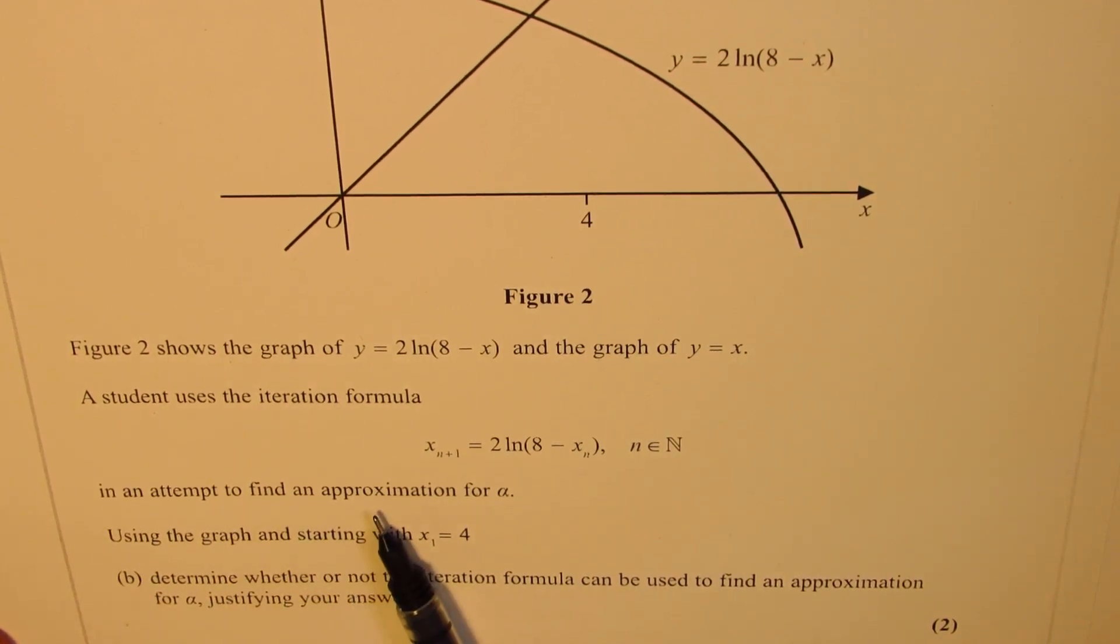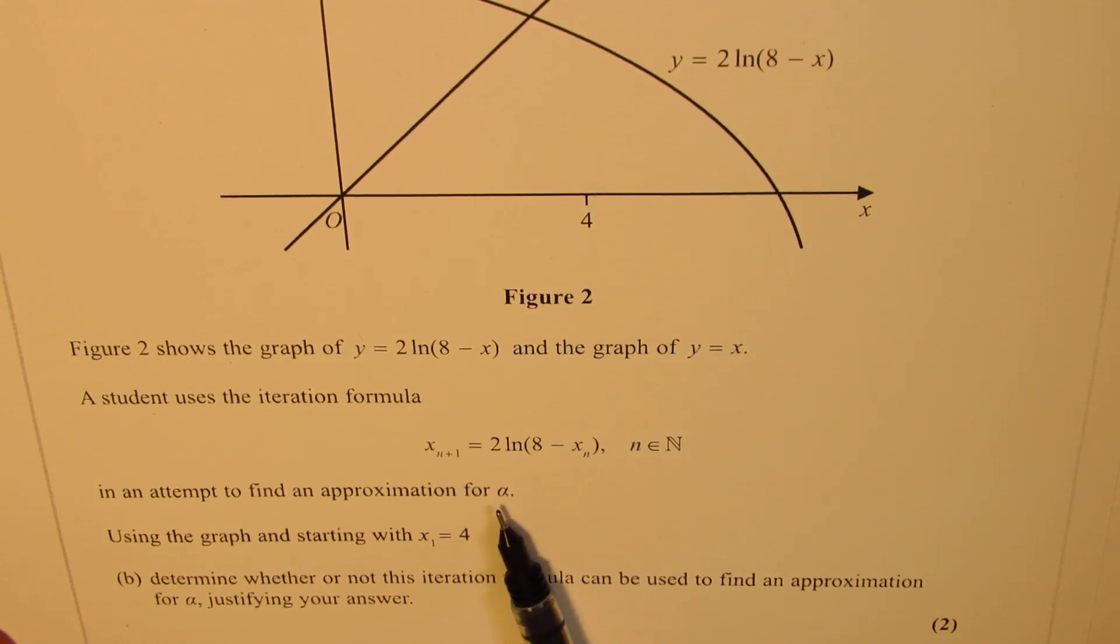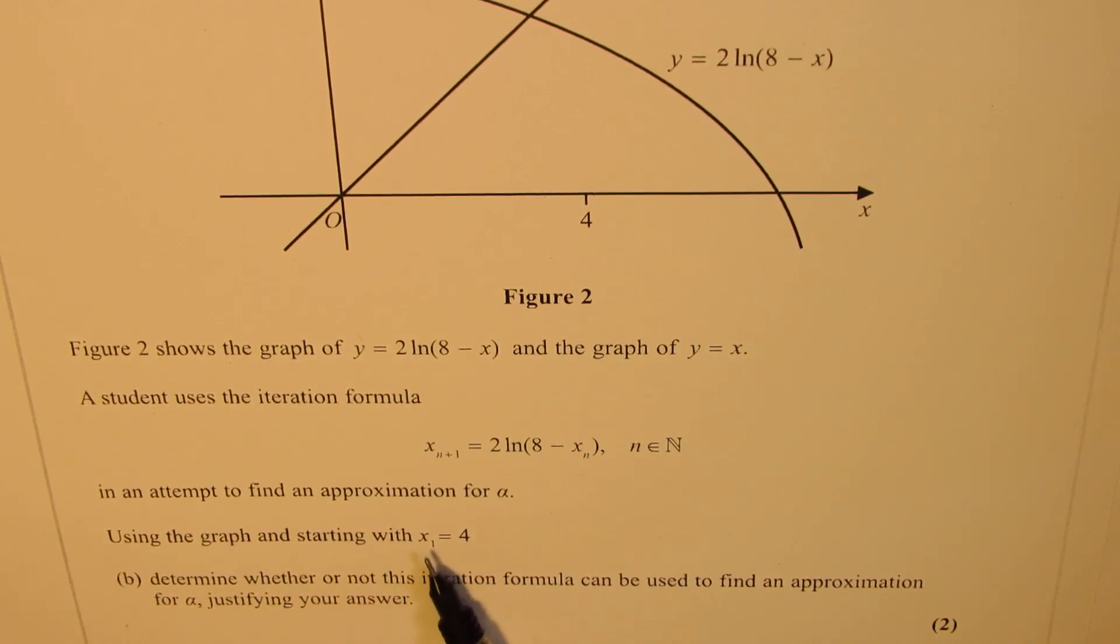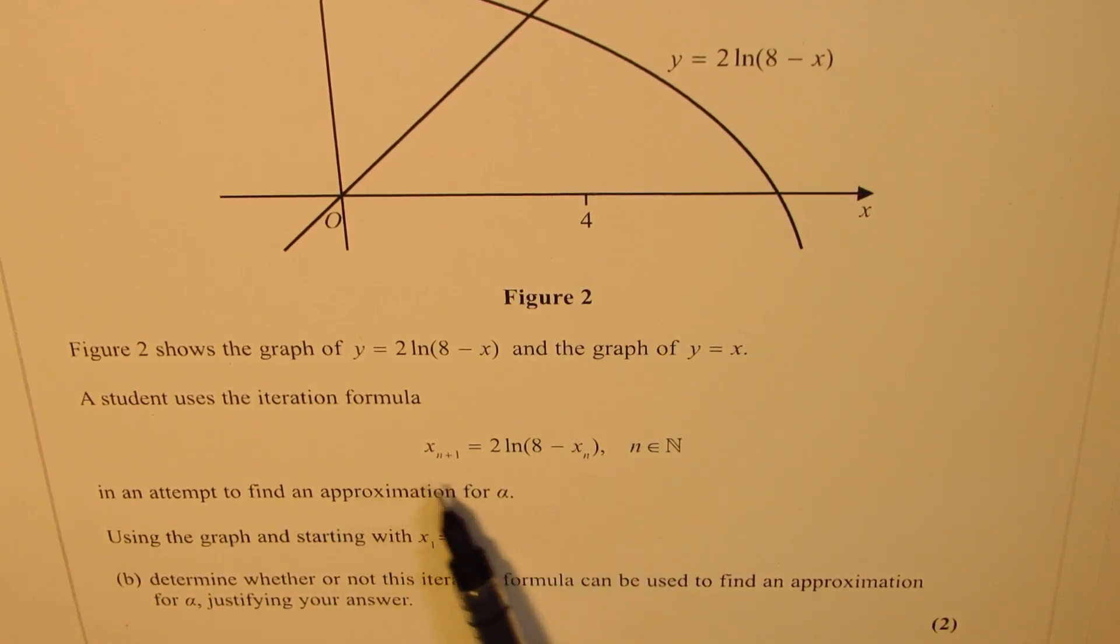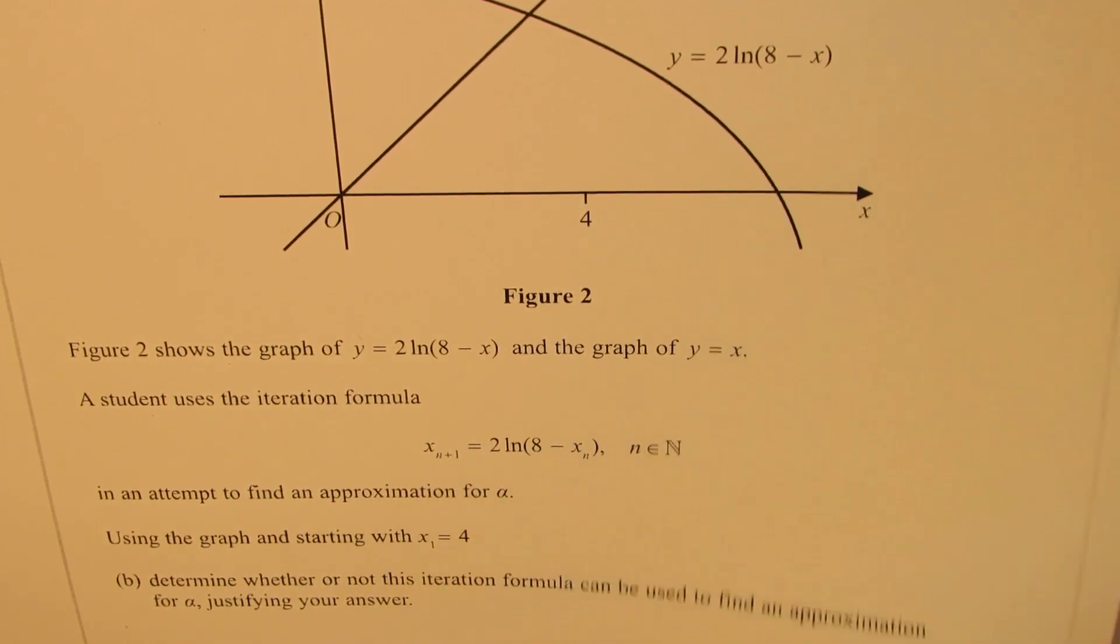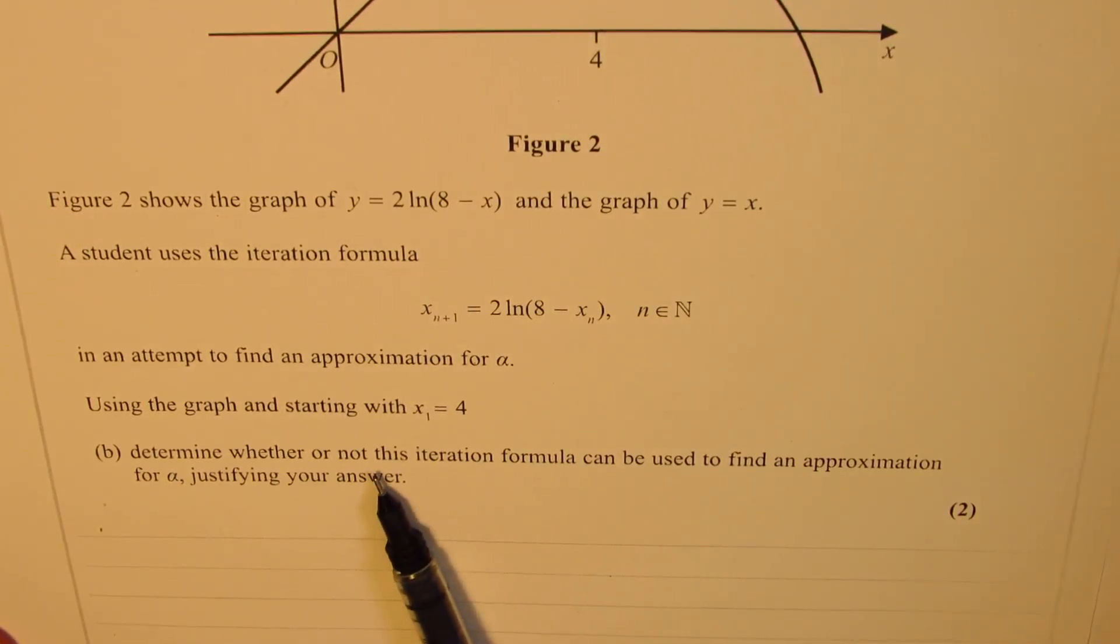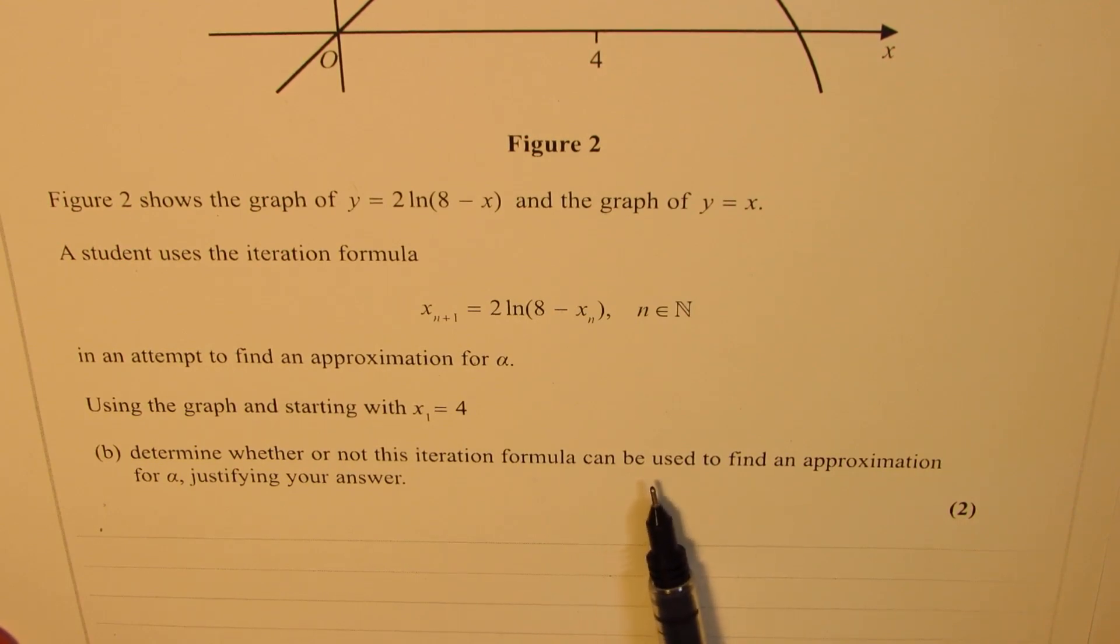Using the graph and starting with value x_1 equals 4. Part B of the question: determine whether or not this iteration formula can be used to find an approximation for alpha. You can always pause the video, answer the question, and then look into my suggestions.